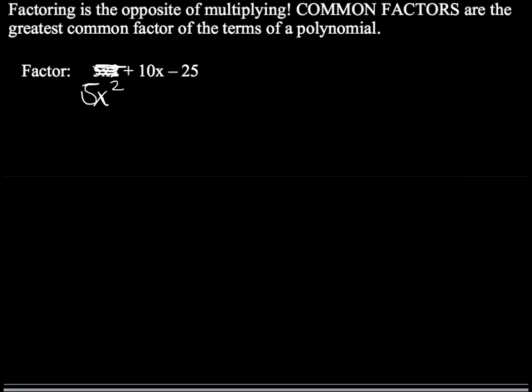Okay, welcome back. Here we go. I see that the first term is divisible by 5, and the second term is divisible by 5, and the third term is also divisible by 5. So I think I've got a common factor here of 5. Let's see.